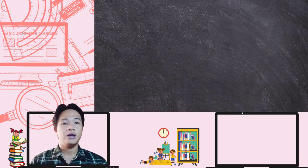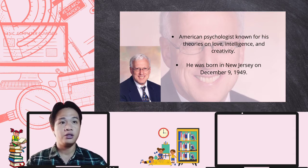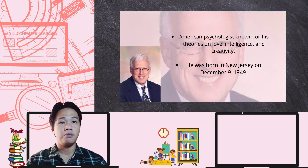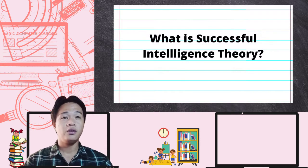The proponent of the intelligence theory and WICS model is Robert Jeffrey Sternberg. He is an American psychologist known for his theories on love, intelligence, and creativity. He was born in New Jersey on December 9, 1949. His interest in psychology began early after experiencing test anxiety and doing poorly on an exam, which made him realize the test was not an accurate measure of his actual knowledge and abilities.